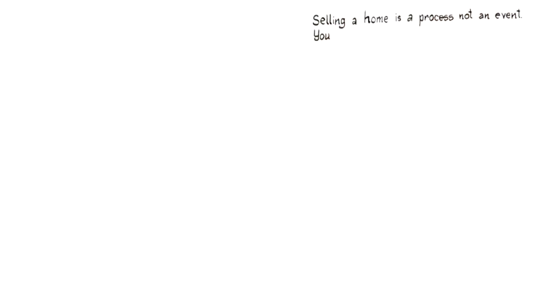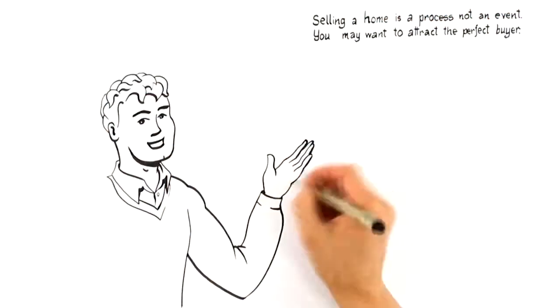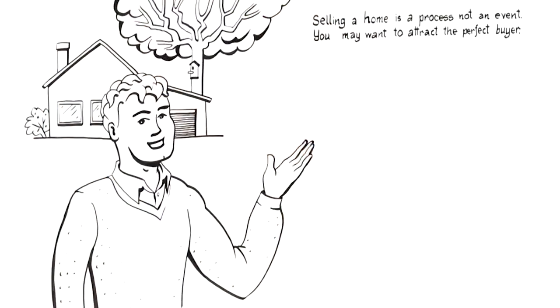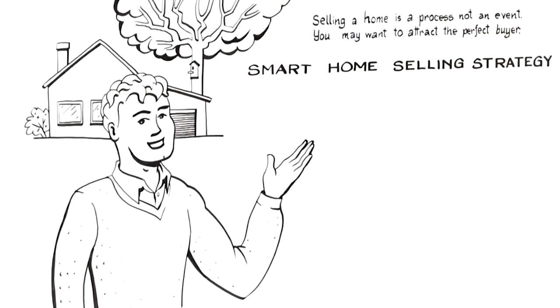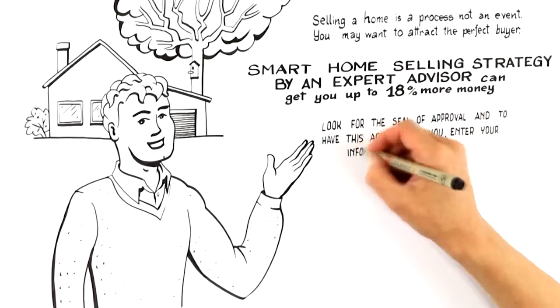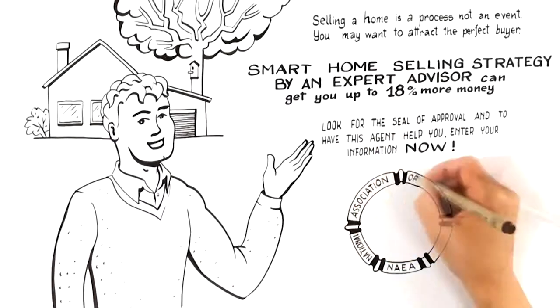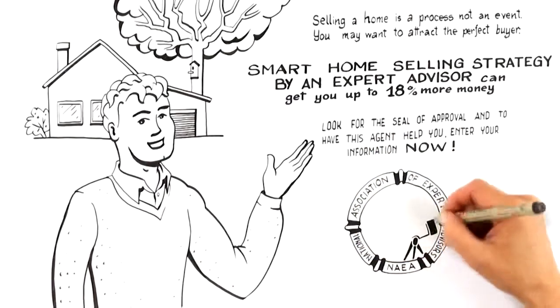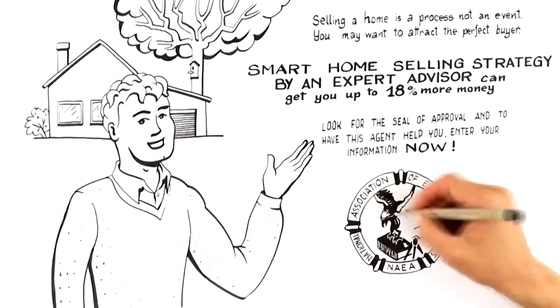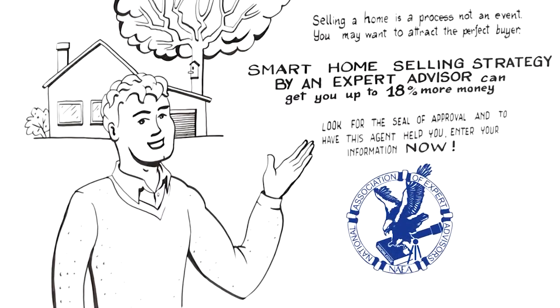By now you know selling a home is a process, not an event. You also learned how to hire an expert who can attract the perfect buyer, willing to pay top dollar for your home. So if you're selling, the next logical step is to request a free, no-commitment smart home selling strategy from an expert advisor. Expert advisors are members of the National Association of Expert Advisors who are trained and certified to prepare a smart home selling strategy that can sell your home faster and for up to 18% more money than the traditional real estate agent. Look for the seal of approval and to have this agent help you, call the number now.